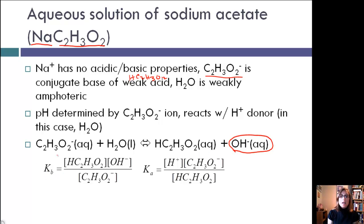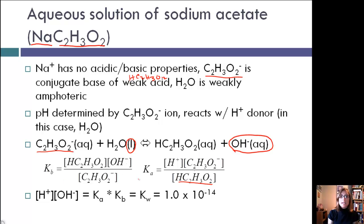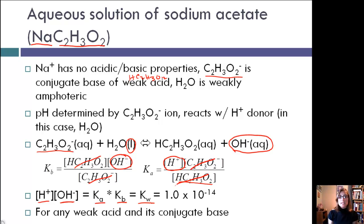We can write a Kb expression for this ion: Kb equals HC2H3O2 times OH-minus divided by C2H3O2-minus — not including water because it's a liquid. We can also write the Ka for the acid. When we multiply Kb and Ka together, the concentration of the acid and the ion cancel, leaving OH-minus times H-plus, which equals Kw. So Ka times Kb equals Kw — this holds true for any weak acid and its conjugate base, and we can use this relationship to solve for several different values.